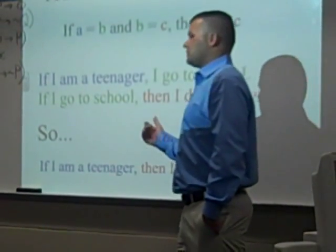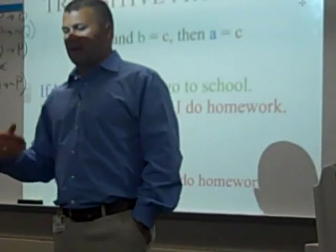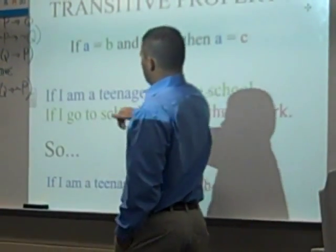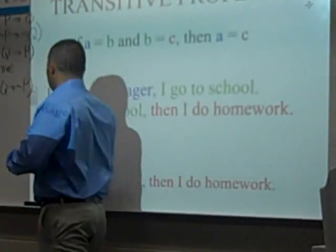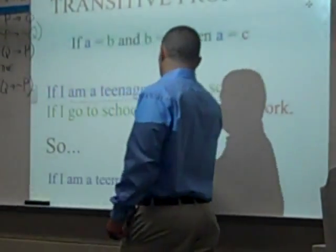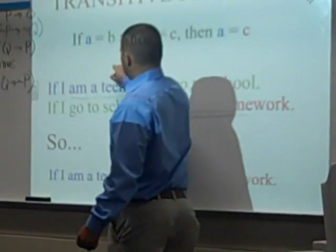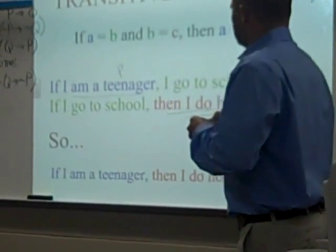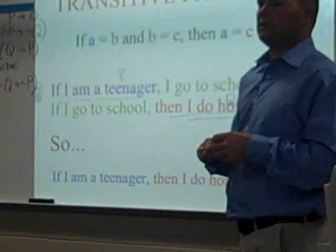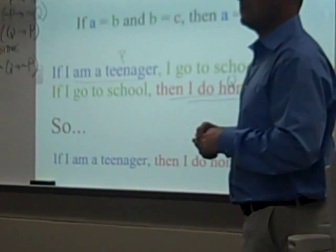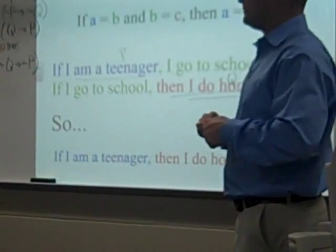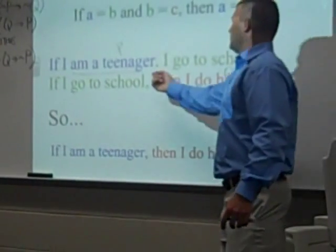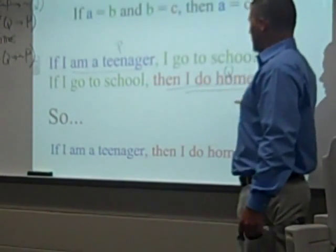On the back side, there are a few of these with transitive properties, and some that have multiple choice. Go through there and label by underlining your hypothesis, then label your conclusion, so we have P and Q. What do you notice in these two sentences? Look at the color — 'I go to school' appears in both. So we don't use either one of those. Look for your hypothesis to follow the 'if,' and look for your conclusion to follow the 'then.'